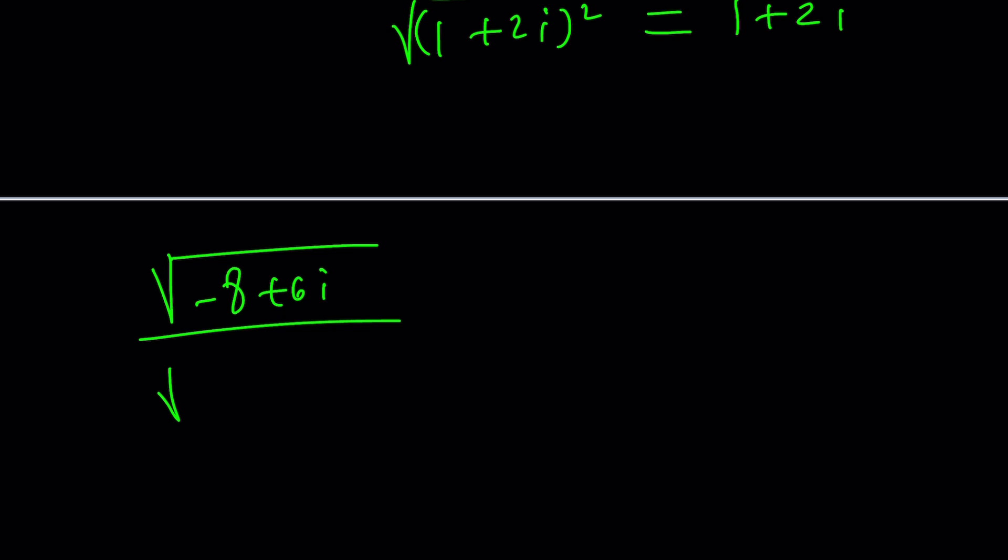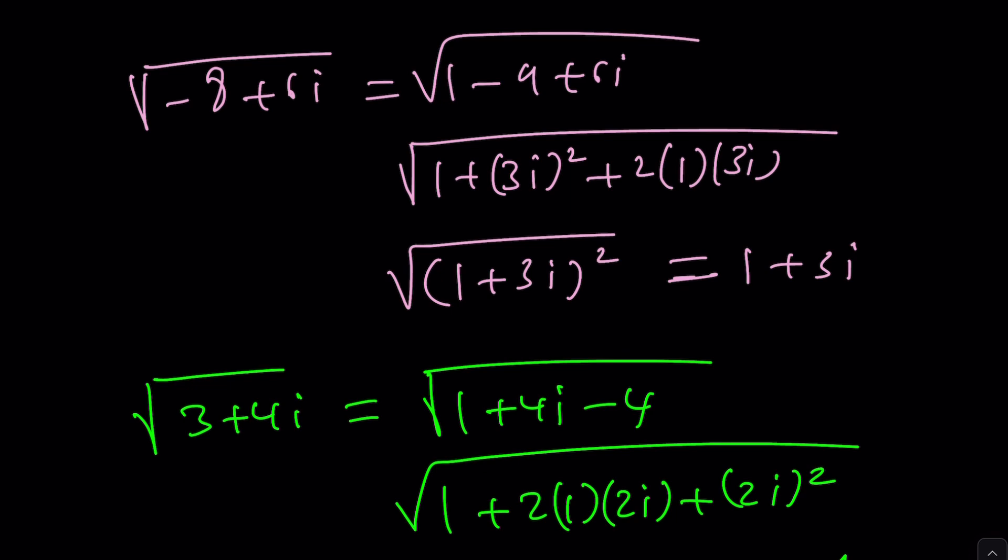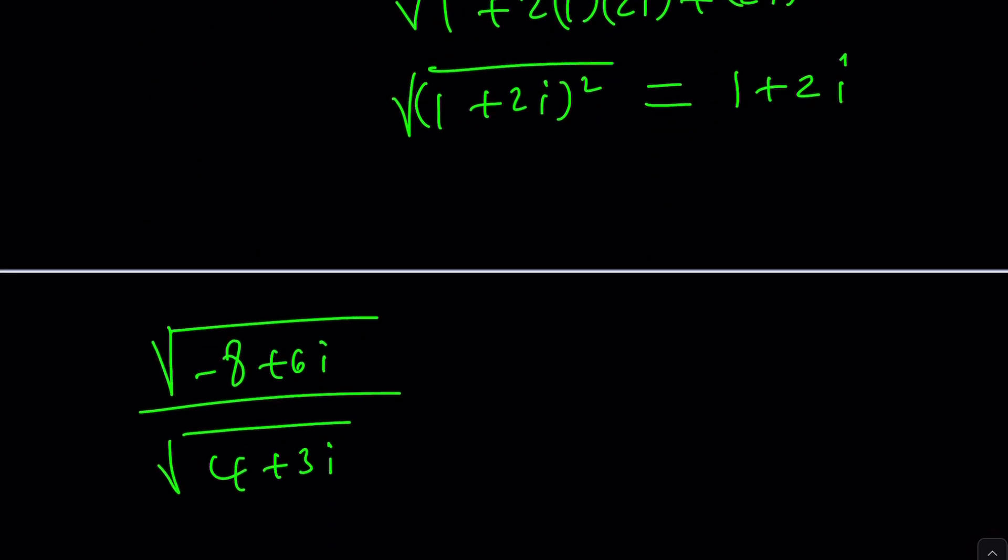So now we have the following. Was it like that? I'm not exactly sure. Maybe I meant it the other way. Oh, three plus four i. Never mind. It's not four plus three i. That's different. Three plus four i. And now this was one plus three i. This is one plus two i. How do you simplify that?